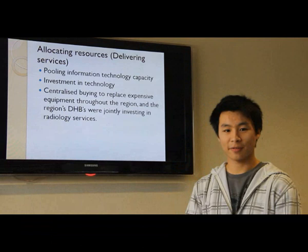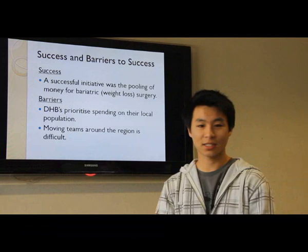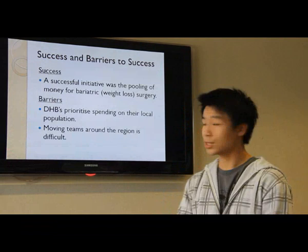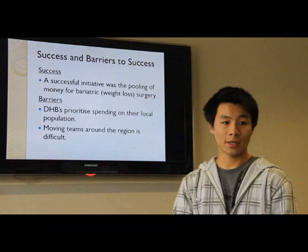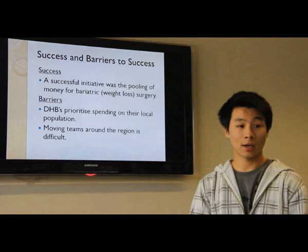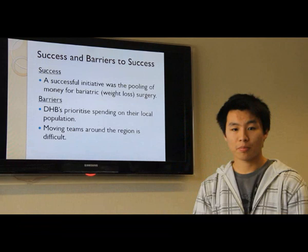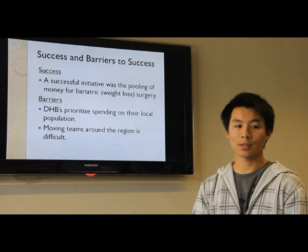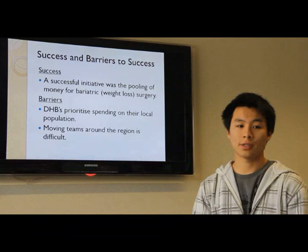Now I'll cover the successes and barriers to success. An example of a successful initiative was the pooling of money for bariatric weight loss surgery, where each region pooled the available money and jointly devised agreed criteria to ensure equity of access. Some barriers to funding together involved DHBs prioritizing spending on their local population, and the movement of teams to help other centres was difficult, making it hard to implement regional funding for efficiency gains.